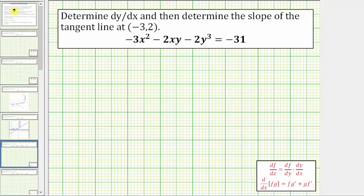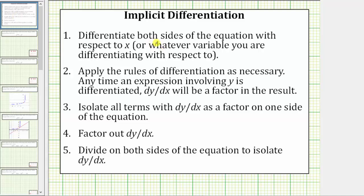To perform implicit differentiation, the first step is to differentiate both sides of the equation with respect to x. Step two, we apply the rules of differentiation as needed. However, any time an expression involving y is differentiated, dy/dx will be a factor in the result due to the chain rule. Step three, we isolate all of the dy/dx terms on one side of the equation. If there's more than one dy/dx term, in step four we factor out dy/dx. And then finally step five, we divide both sides of the equation to isolate dy/dx.